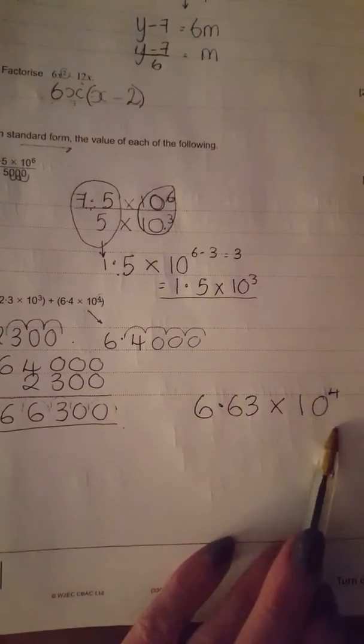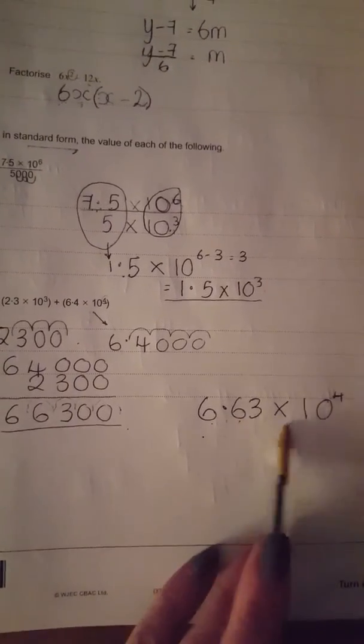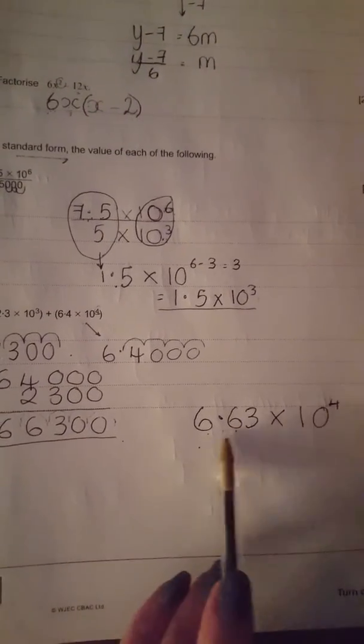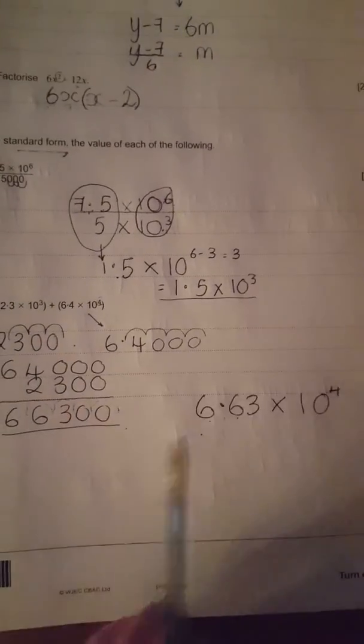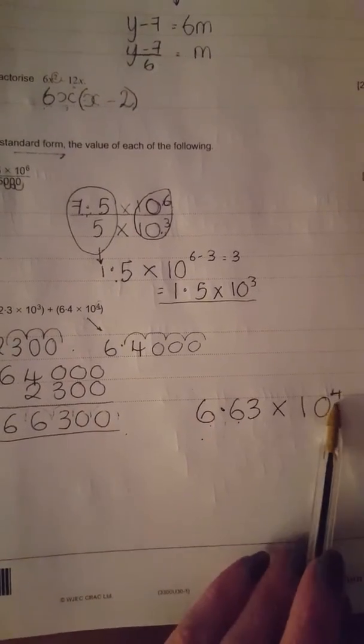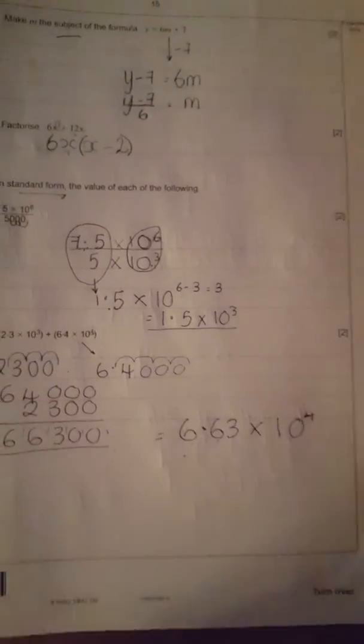That is now in standard form. 6.63 times 10 to the power of 4. The reason it's in standard form is that number is between 1 and 9 and it's 10 to the power of a number. And that is standard form.